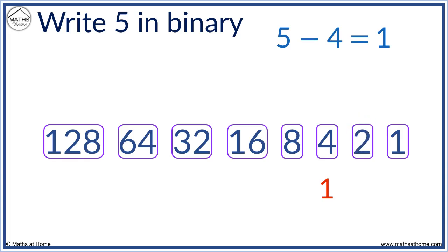2 is bigger than 1 so we put a 0 to show that we will not use any 2's. Now we can use a 1 so that 1 minus 1 equals 0. Once we get to 0 we are complete. 5 in binary is 1, 0, 1.